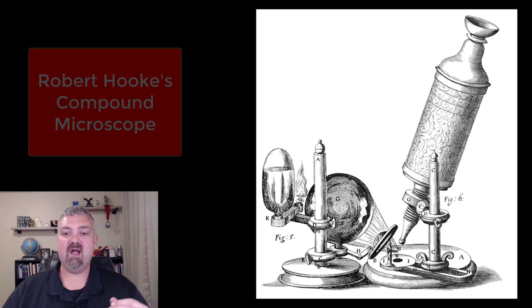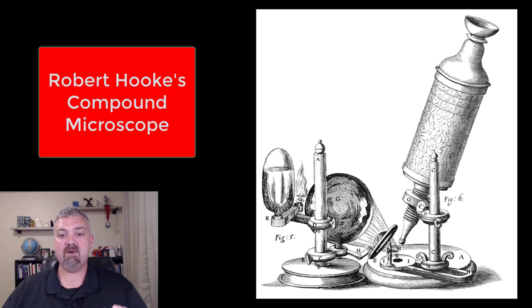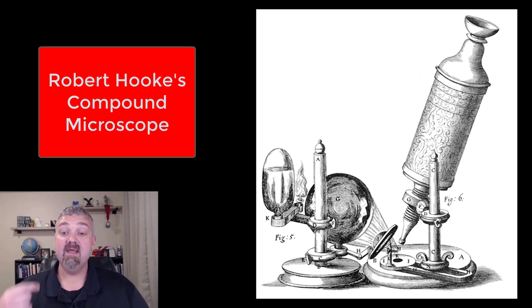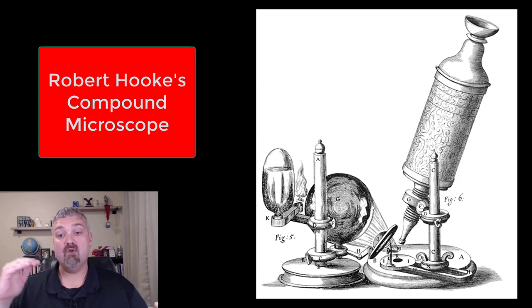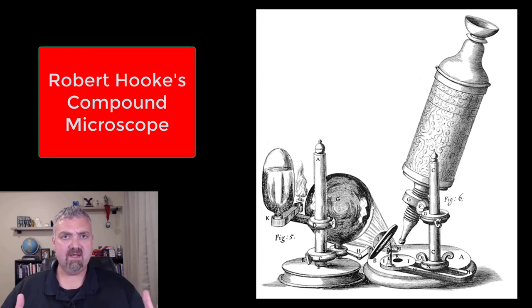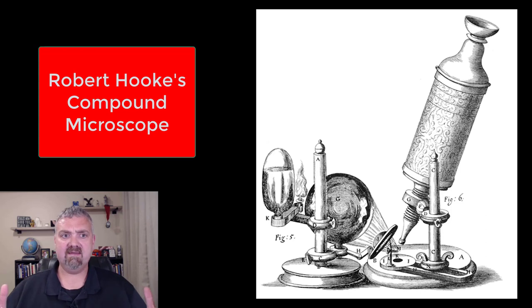And then we have Robert Hooke. Here's Robert Hooke's microscope — much more complicated. This is a compound microscope, like the ones we use in lab. Remember, compound microscopes have multiple lenses in them. And he could see amazing things, but nowhere near what Antony Van Leeuwenhoek could.